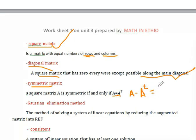Gaussian elimination method: The method of solving a system of linear equations by reducing the augmented matrix into row echelon form.